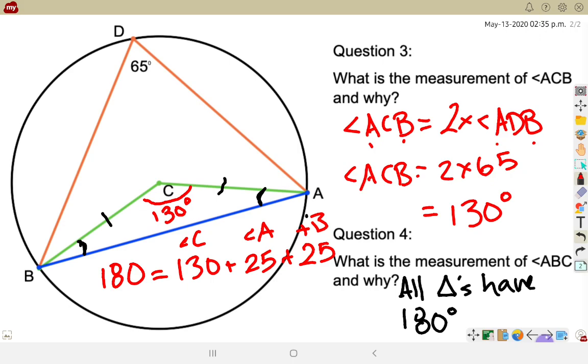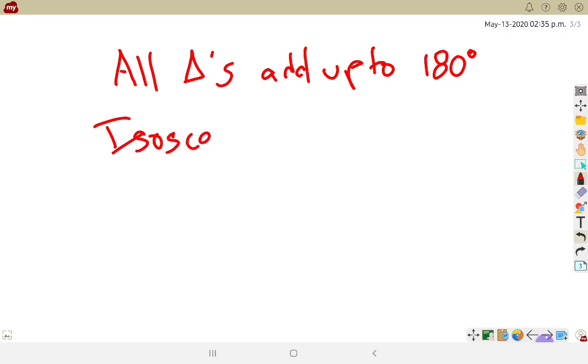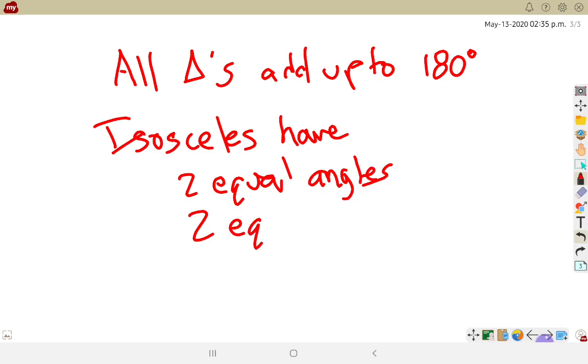So something to remember, key points, these are some things like way back from grade 6. So all triangles add up to 180 degrees. Isosceles triangles have two equal angles and two equal sides. So if you see a triangle made up, and it's got the radius as part of its side lengths, if you've got two radii as its side lengths, then you've got an isosceles triangle.